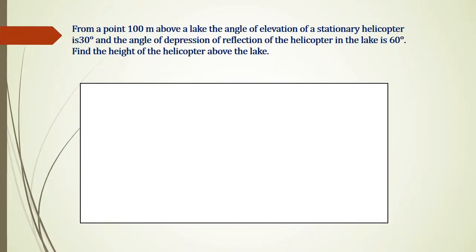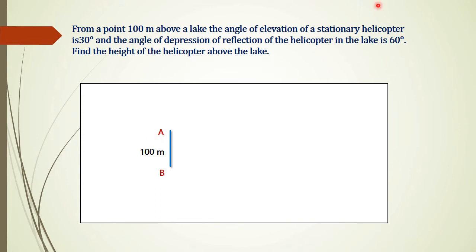We have to find the height of a helicopter placed at a certain distance from the lake. The helicopter is stationary. To proceed, we draw a figure. Let AB be a point 100m above the lake. From this point we are observing the helicopter, which is placed at point C, and the angle of elevation of this helicopter is 30 degrees.